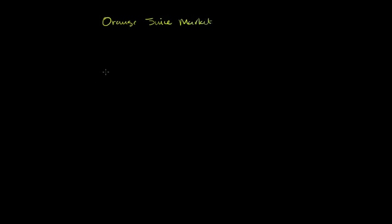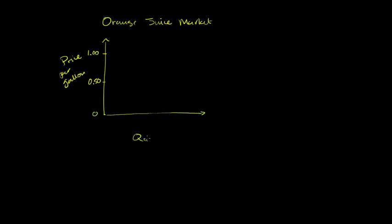So this is the orange juice market. Let's draw some supply and demand curves. The vertical axis is price per gallon — $1 here, 50 cents here, and zero at the origin. The horizontal axis is quantity in millions of gallons per week, marked at 1, 2, 3, 4, 5, and 6.